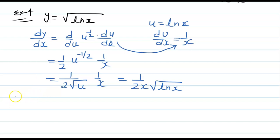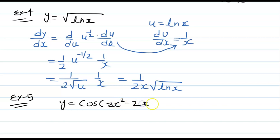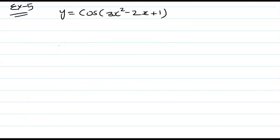I am trying to cover each and every type of example so that you should not face any difficulty. Example 5: suppose y equal to cos(3x squared minus 2x plus 1). Please pause the video and have a go. Welcome back. Here u is 3x squared minus 2x plus 1.